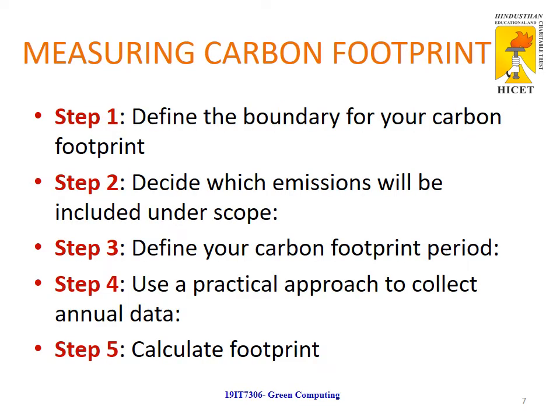There are five steps in measuring the carbon footprint. The first step is to define the boundary of the carbon footprint. Our main objective is to reduce the emission of carbon, so we need to define the boundary. There are three types of boundary: the first is operational control, which includes all the operations we are performing in the organization; the second is financial control, which includes all the financial elements in the organization.